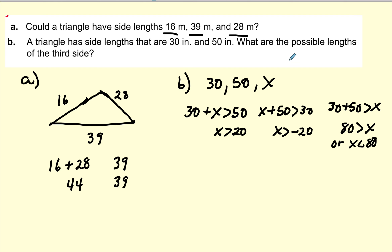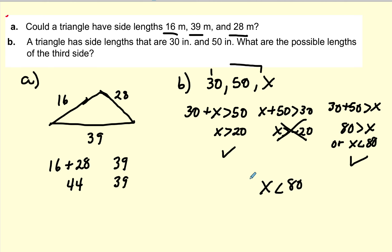What are the possibilities for a third side given sides of 30 and 50? We do the same thing: two sides must be greater than the third. Solving for X: X must be greater than 20, and we discard X greater than negative 20 as unhelpful. Then 30 plus 50 is 80, which is greater than X, so X is less than 80. X must be greater than 20 and less than 80 — any number between 20 and 80 will work.